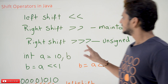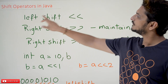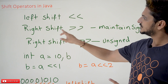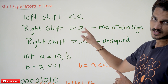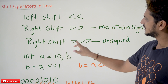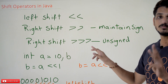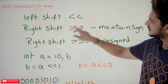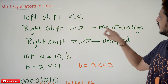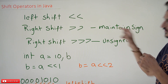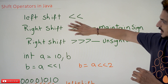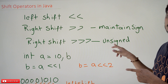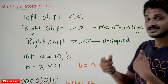Coming to today's class, we are having left shift — the symbol is less than less than (<<). Right shift — that is greater than greater than (>>). One more right shift is there: greater than greater than greater than (>>>), three symbols. The >> right shift is going to maintain the sign bit, whereas >>> is not going to maintain the sign bit — it is unsigned.